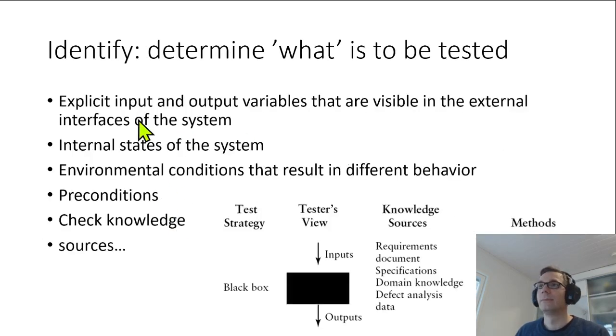So here is a list on ideas on what needs to be tested: explicit input and output variables that are visible in the external interfaces, in the graphical user interfaces of the system, internal states of the system, environmental conditions that might result in different behavior, preconditions and so on. But really this list should come from the knowledge sources.